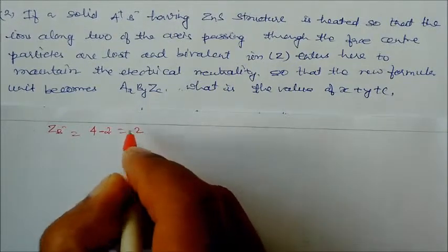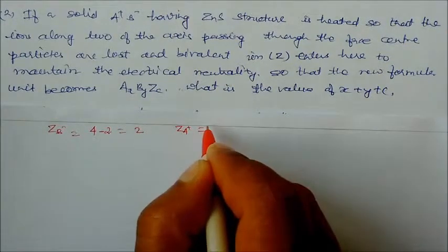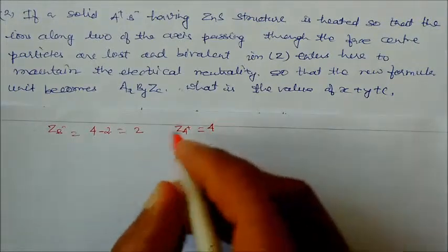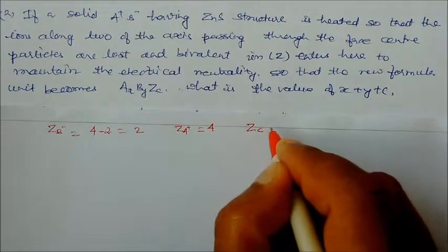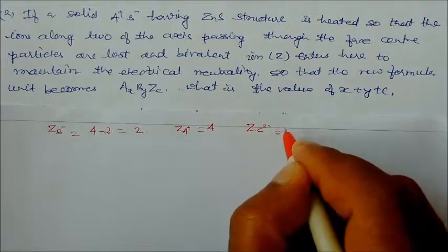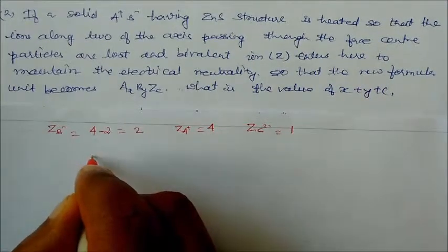So B will be 2. For A+, the total atoms will be 4. And from C2-, it will be 1. So the structure is A4B2C1.